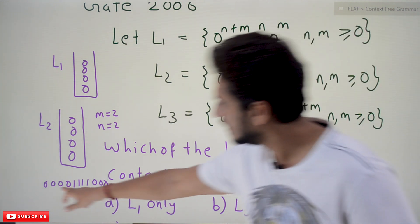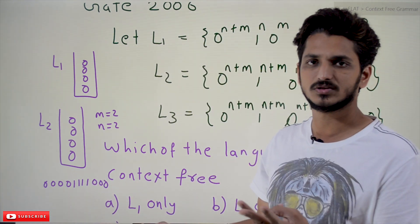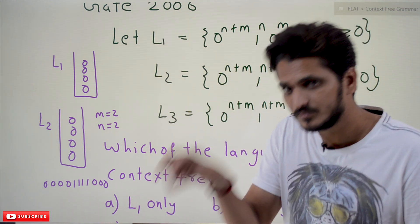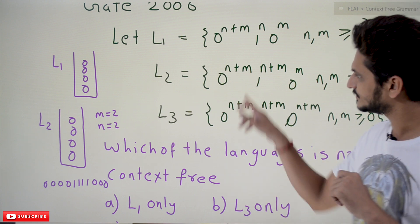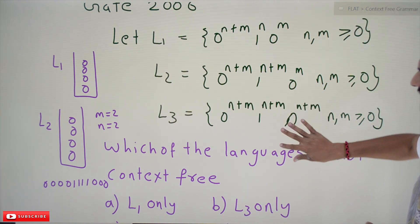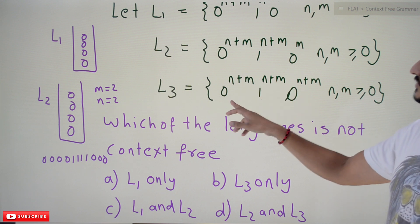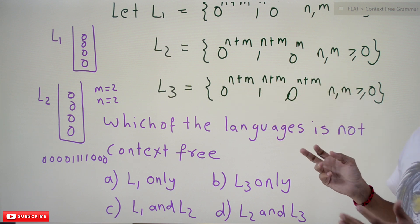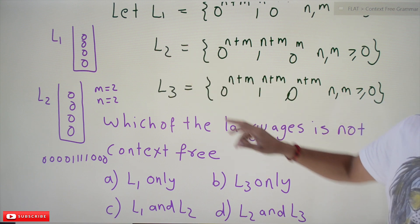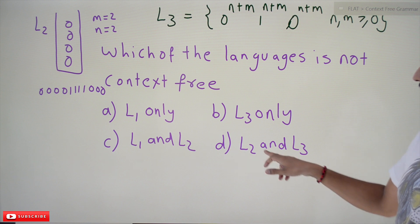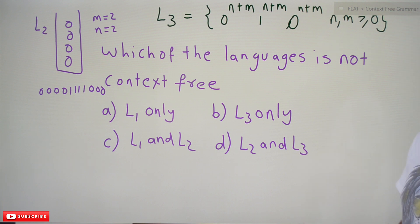For example, take 0 0 0 0 1 1 1 1 0 0 — if m=2, there are extra zeros but we cannot count them since the stack is already empty. There is no way to count that, so L2 is not a context-free language. The third one, L3, is also not a context-free language — it is similar to 0^k 1^k 0^k, which is analogous to aᵏbᵏcᵏ, which is not a context-free language. So L2 and L3 are not context-free languages, and the answer is option D.